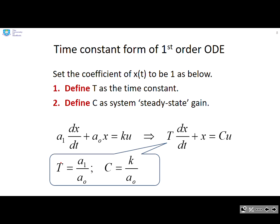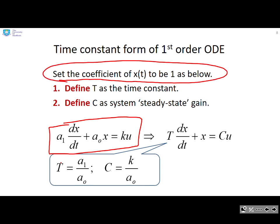So let's look then at our generic first order ODE. So here's our generic first order ODE: a1 dx/dt plus a0 x equals ku. Now for time constant form, what we do is we set the coefficient of x(t) to be 1. So if you look here, you see I've set the coefficient of the x to be 1 and the way I do that for this example is I just divide through by this a0. So then I end up with a T dx/dt and a c times u. So this T is the time constant and this c is the steady state gain and you can see for this example, the numbers are easy: T is a1 over a0 and c is k over a0.